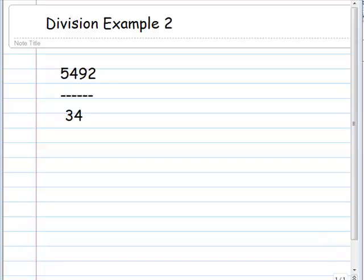Division example number 2. We have 5,492 divided by 34. So again we want to write this out in long division form. 5,492 divided by 34.